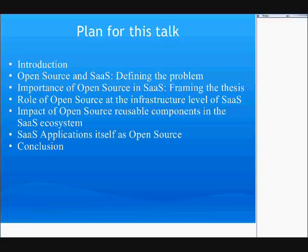Let me give an outline of my talk. First, I'll give a brief introduction to the topic, then I'll define the problem I am going to discuss — that is, the role of open source in a SaaS-based world. I will also try to talk briefly about how the role of open source is either ignored or dismissed by various pundits and opinion leaders. Then I will frame the central thesis of my talk, which is about the importance of open source in a SaaS-based world.